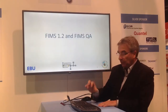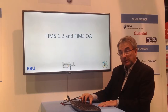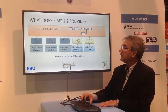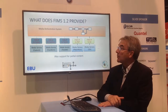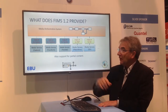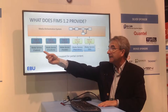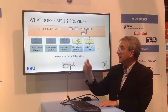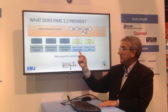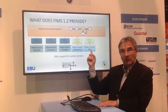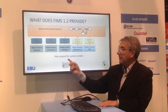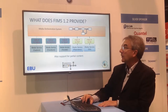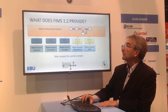FIMS 1.2 and FIMS QA — this is what we are doing now. FIMS 1.2 is going to be announced in the next few weeks. In FIMS 1.1 we had media capture, transformation of content, and transfer of content. In FIMS 1.2 we now have the repository, quality analysis, and we have also been working on timecode to support partial content. That's a lot of progress in FIMS 1.2.